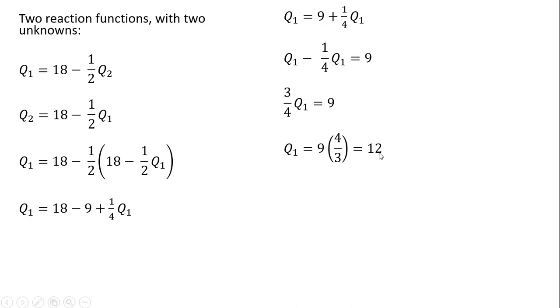What about the output of firm 2? Take this 12 units and plug it into firm 2's reaction function. How does firm 2 react? Firm 1 is producing 12 units of output. It too would like to produce 12 units of output.